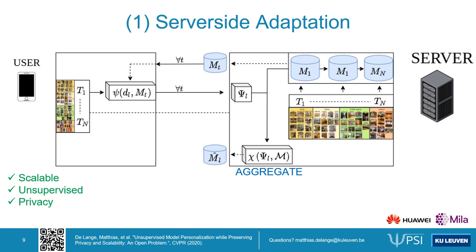As a consequence, no sensitive user data is transmitted at all, and the parameter importance doesn't require labeled user data.